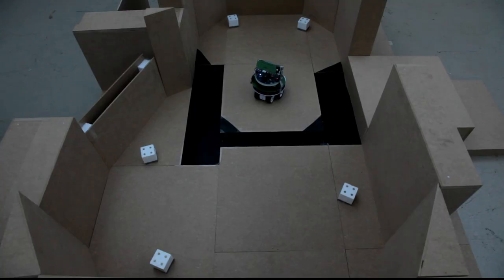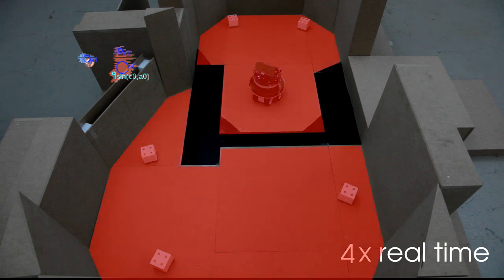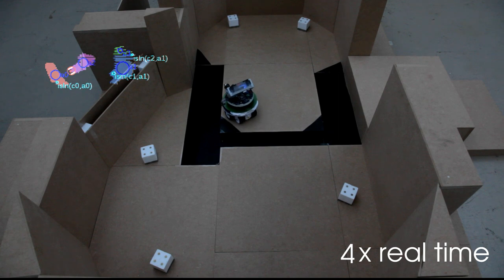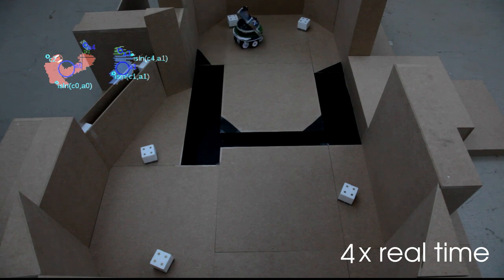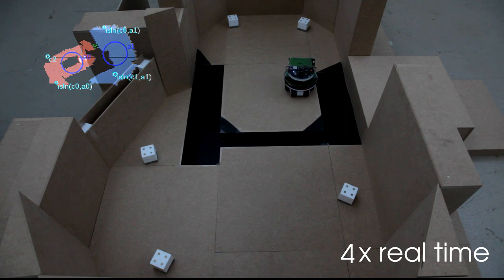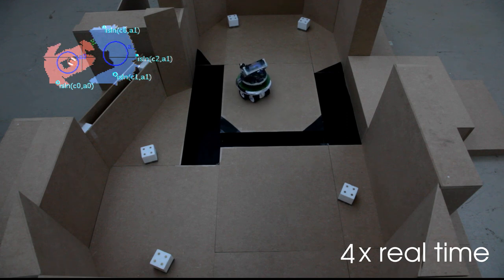To approach this problem, we have built an experimental setup consisting of two areas separated by a valley. In these areas, polystyrene cubes represent resources which the robot can use either to bridge the valley or to build a structure. At the beginning of the experiment, the robot knows neither the topology nor the geometry of the environment and, therefore, starts by exploring its surroundings.